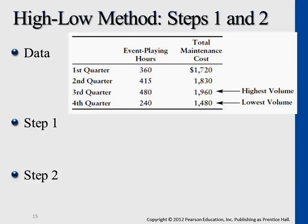You can actually use any two data points. If you pick any other ones — 480 minus 415 — you can get the same slope of $2.